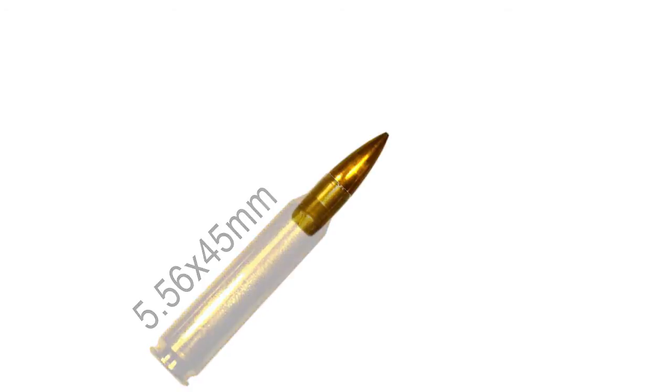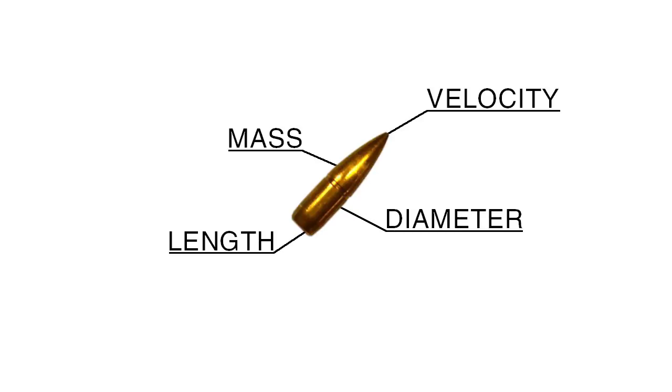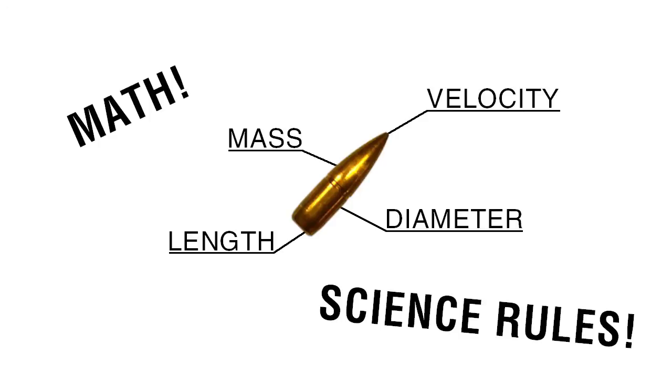So what is the best twist rate? Well, that depends entirely on the ammunition. There are four factors to consider when choosing the best twist rate: the velocity of the projectile, the mass of the projectile, the diameter of the projectile, and the length of the projectile. These are the four main variables used in mathematical equations to determine barrel twist.